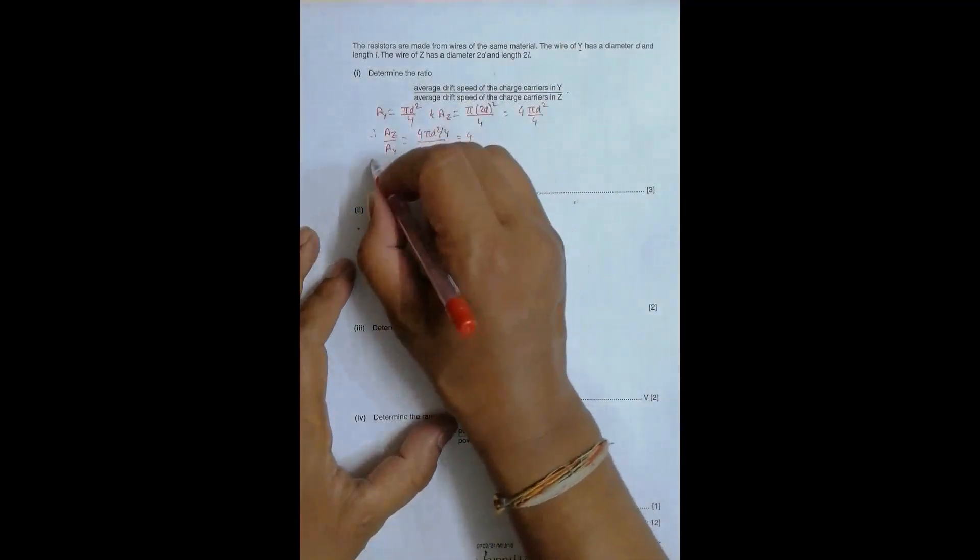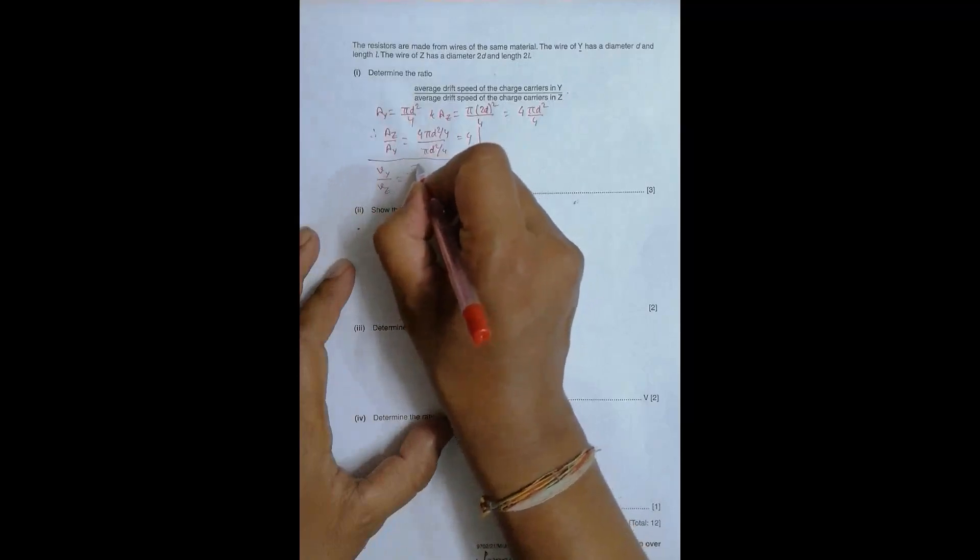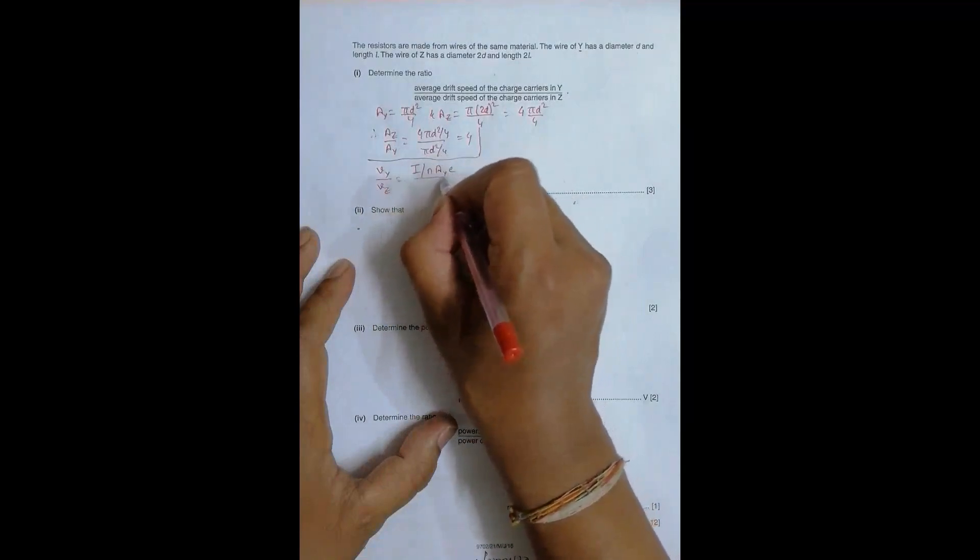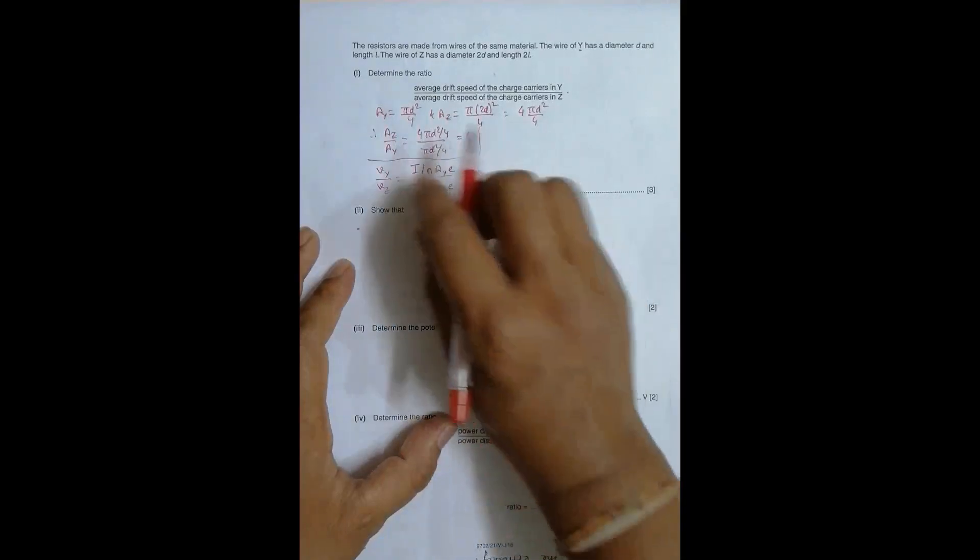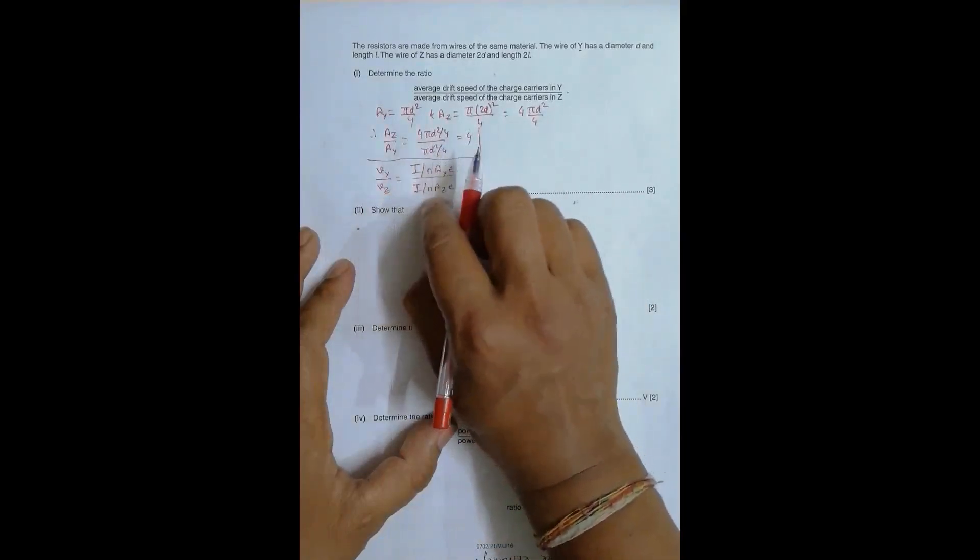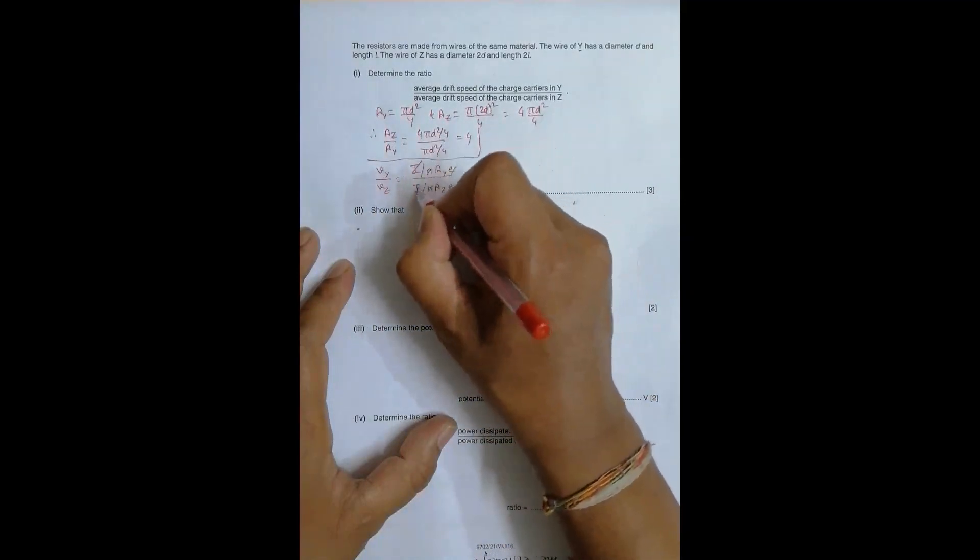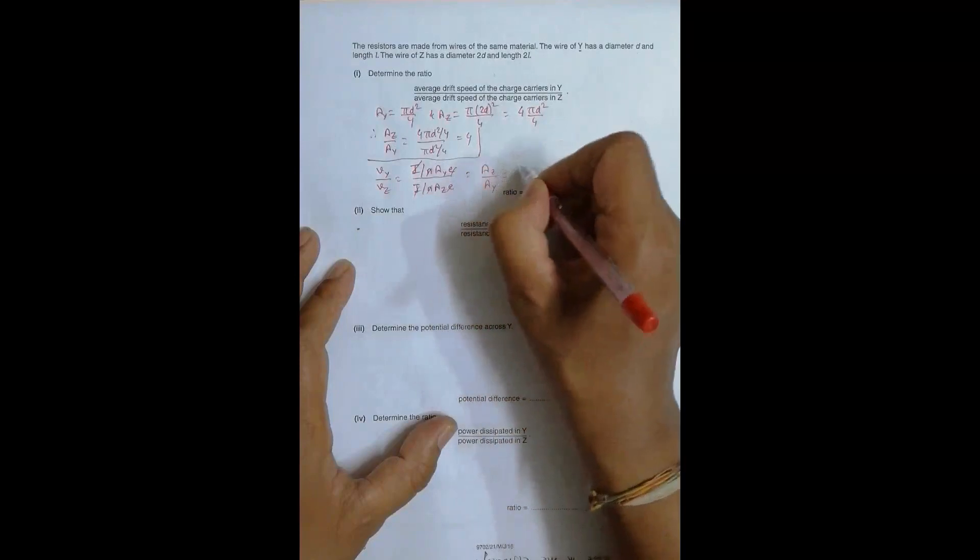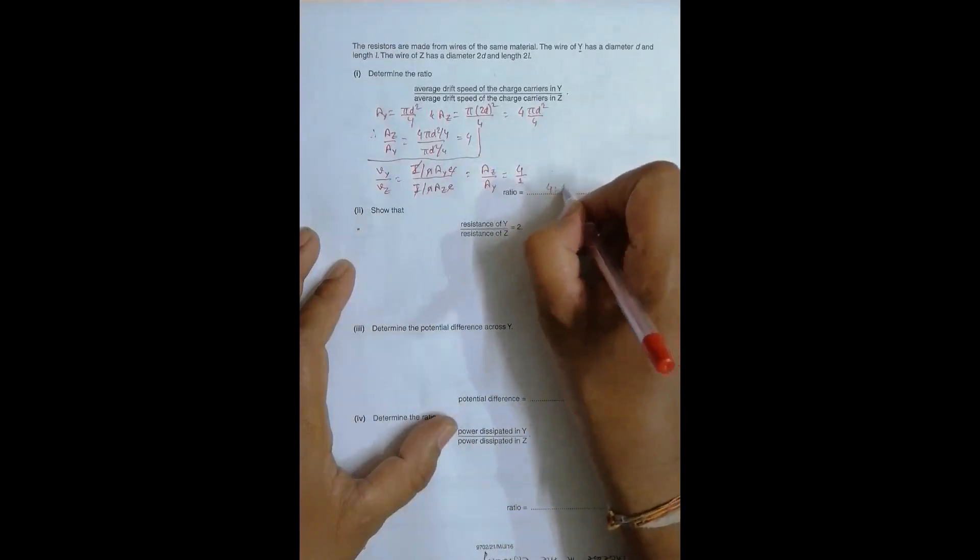Now, what this question asks is the ratio of drift velocity in Y by drift velocity in Z is equal to current by N, A_Y, E divided by current by N, A_Z, E. So for Y, I used Y, and for Z, I used Z. So this is equal to, all of these things cancel. And this A_Z goes up, so it's equal to A_Z by A_Y, which we just discovered that it's equal to 4 is to 1. So therefore, the ratio is equal to 4 is to 1.